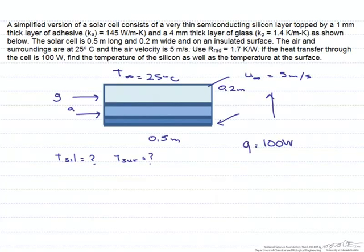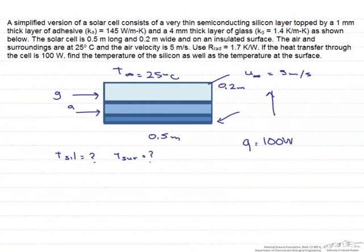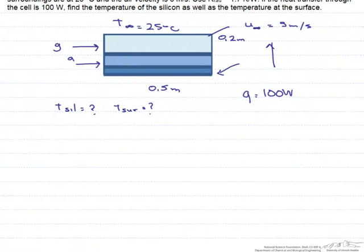In order to be able to solve for this problem, we're given conductivities, we're given resistance, but the one thing that we don't have is the convective heat transfer coefficient for the surrounding air. So we're going to have to find that using a correlation.